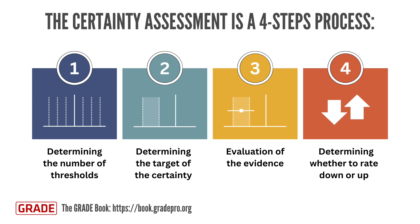Step 3: Evaluating the evidence. In this step, GRADE users systematically assess the eight GRADE domains. These include the five domains that may lead to rating down the certainty of the evidence — study limitations, inconsistency, indirectness, imprecision, and dissemination bias — as well as the three domains that may support rating it up: large effect, dose-response gradient, and the presence of an opposite residual confounding.